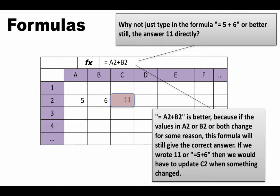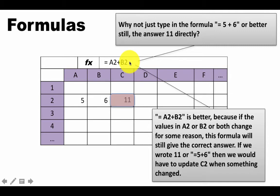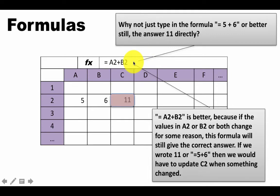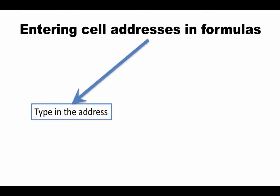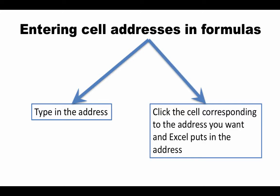Notice that the formula in cell C2 is '=A2+B2', and A2 and B2 are addresses of other cells. This is very common — whenever we write formulas, they will be based on several cell addresses. Excel provides two ways to enter cell addresses into formulas. One way is what we've already seen: simply type out the cell address. In C2 we typed '=A2+B2' by simply typing those cell addresses.